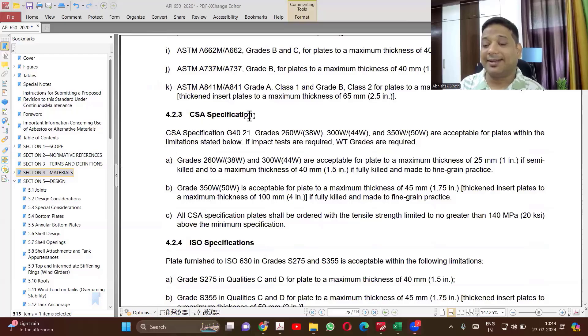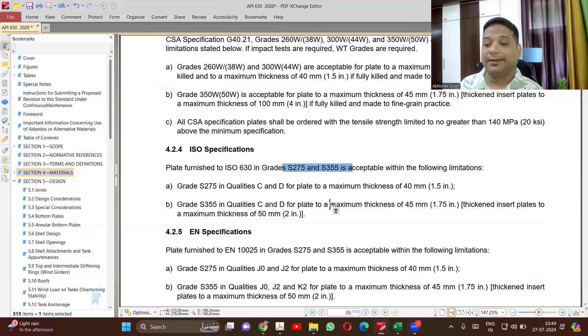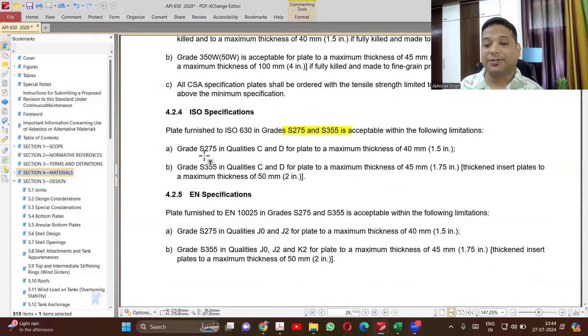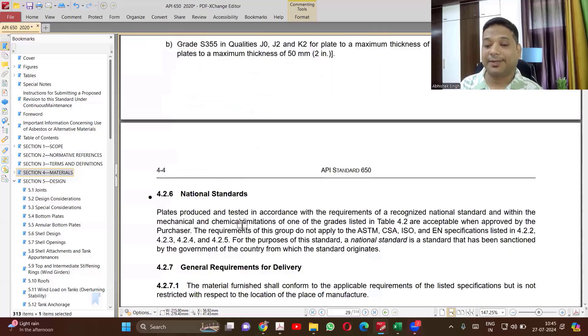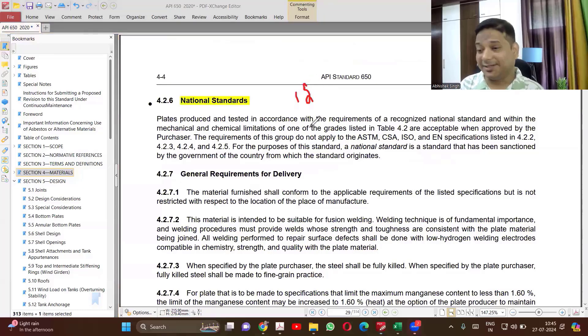So some CSA, this is Canadian specification. ISO, so ISO material which is permitted. These are the grades, which 275 and 355. EN specifications, European. Then some national standards. Like if you are from India, you know that we follow IS standard for tanks, because that is much cheaper compared to other ASME or ASTM materials. So IS becomes available. That also is permitted. So you can use.